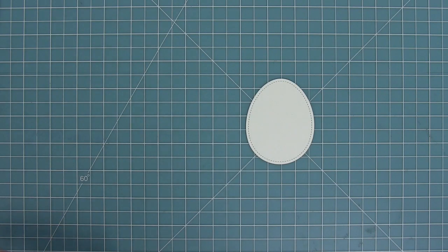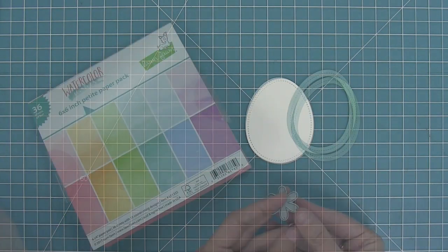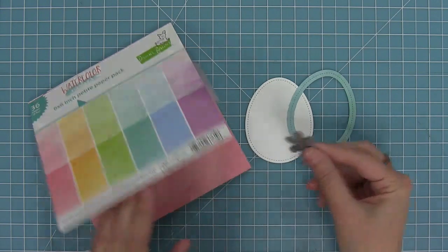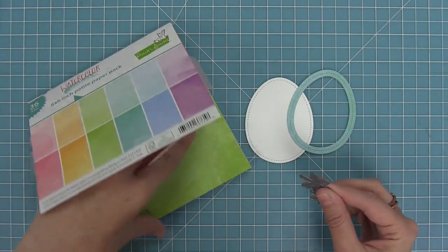Next up I'm going to be using the daisies from the little flowers dies. I'm going to use both the large and small size and I'm going to die cut a bunch of different colors of the watercolor wishes paper again.